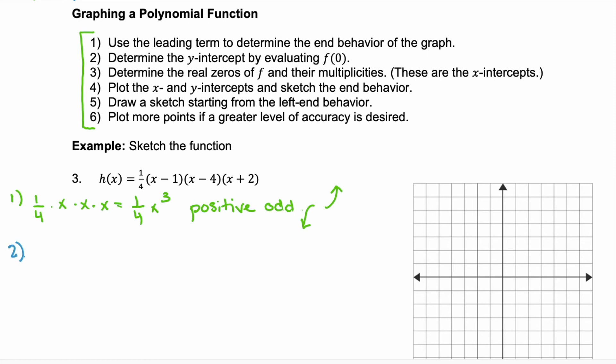Step two, we'll want to find the y-intercept. Your y-intercept is f(0). So, what you're doing is you're substituting in 0 for every x. So, we would have 1/4 times (0 - 1) times (0 - 4) times (0 + 2). Simplify those and you have 1/4 times (-1) times (-4) times 2. Multiply all those together and you get 2 which tells us that our y-intercept is the point (0, 2).